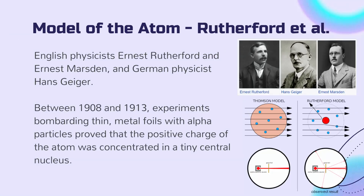A few years later, the model of the atom was refined by English physicists Ernest Rutherford and Ernest Marsden, and German physicist Hans Geiger. Through their experiments bombarding thin metal foils with alpha particles, they discovered that the positive charge of the atom was concentrated in a tiny central nucleus.